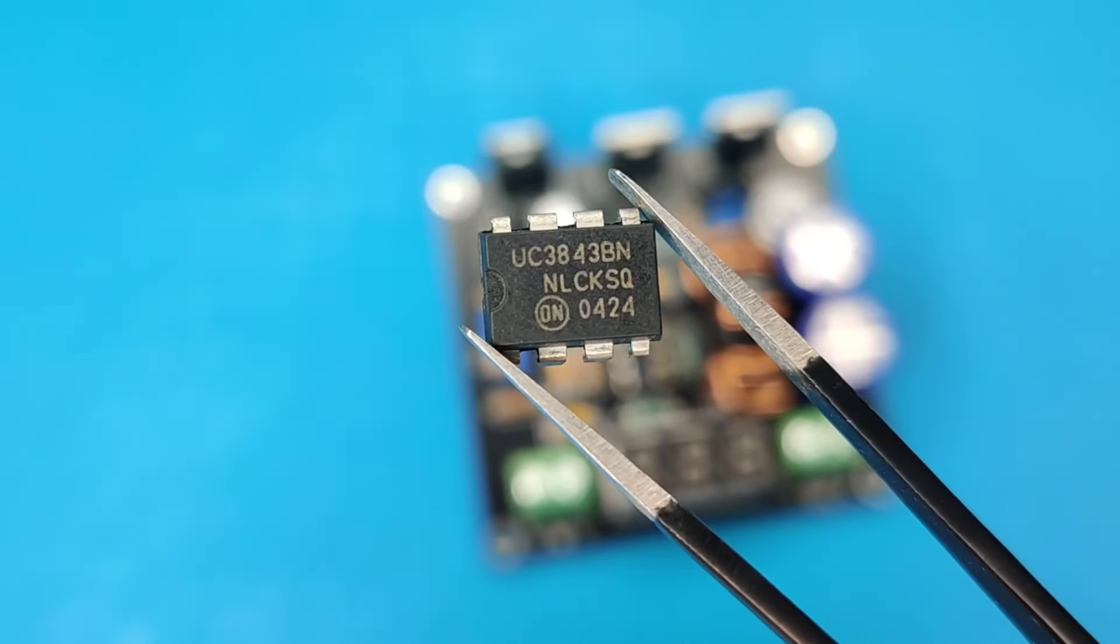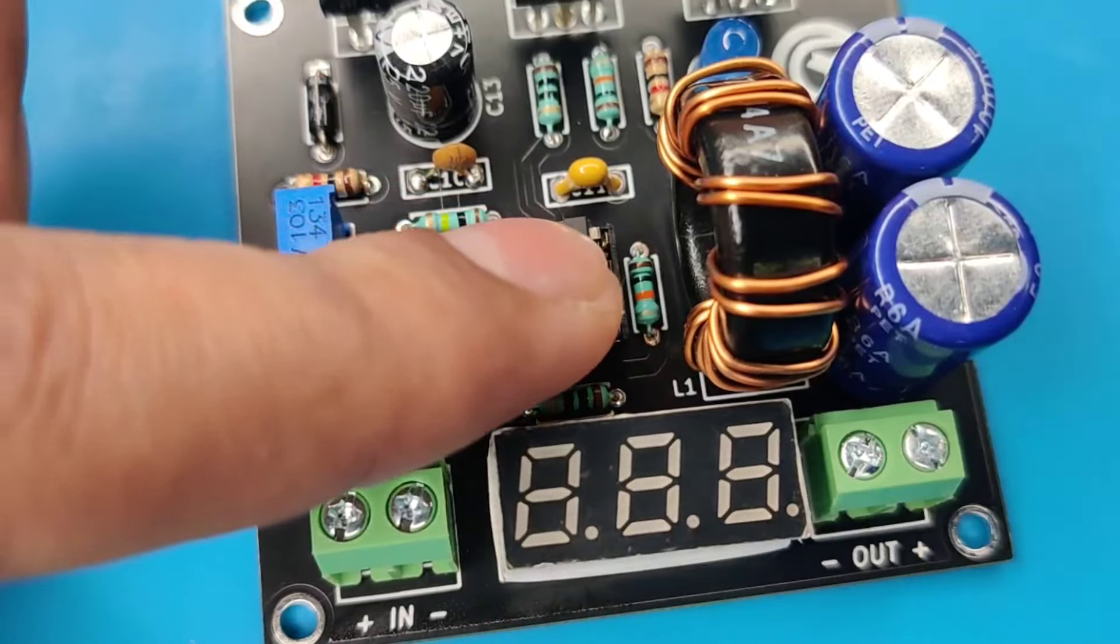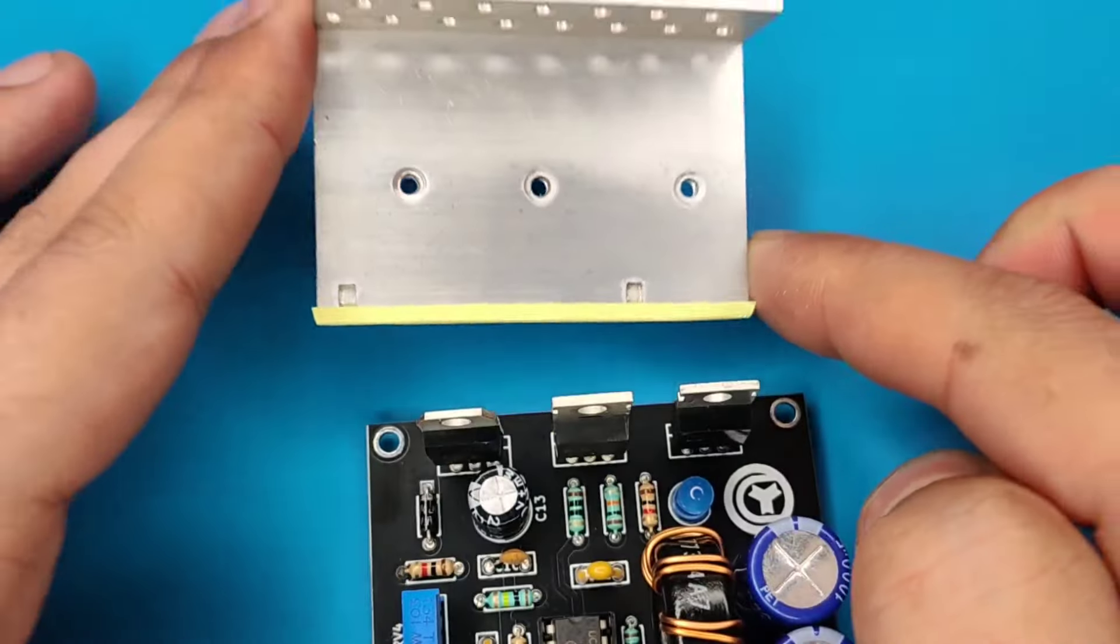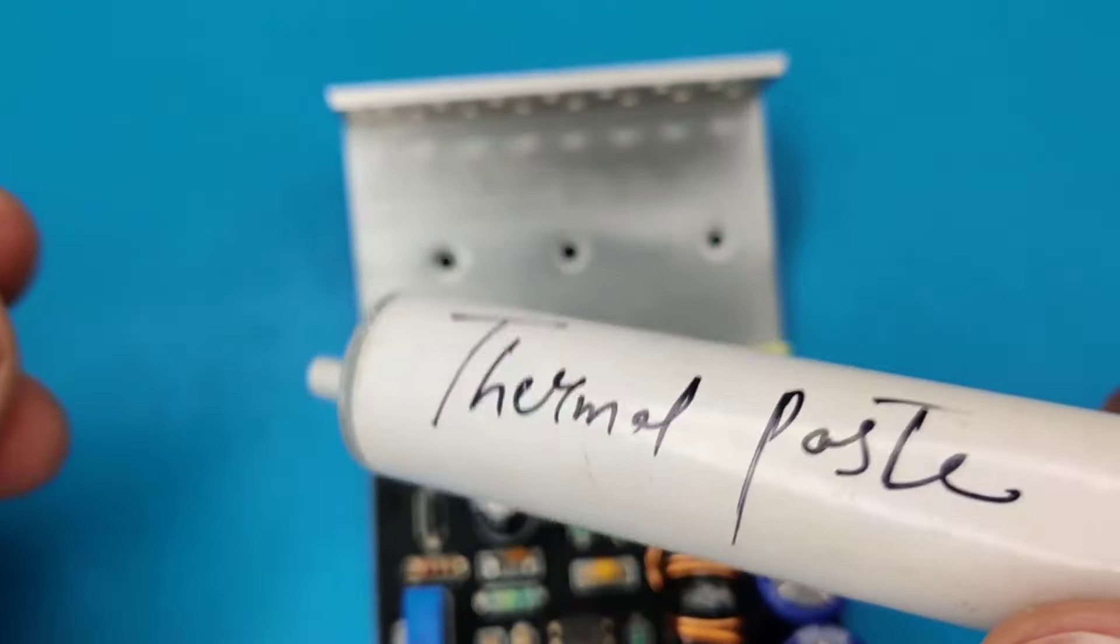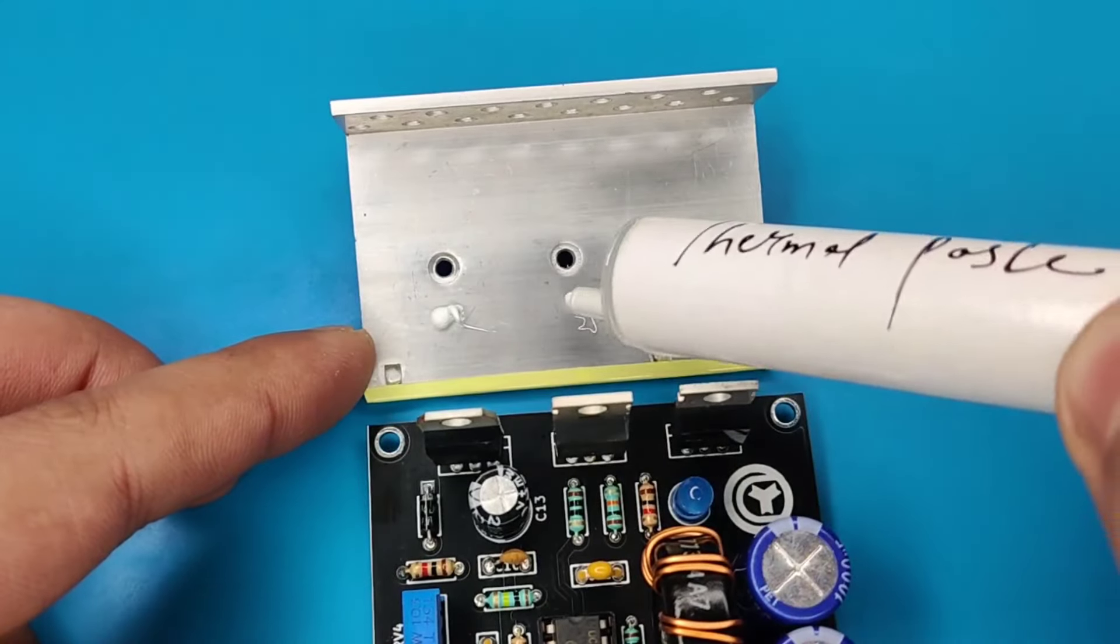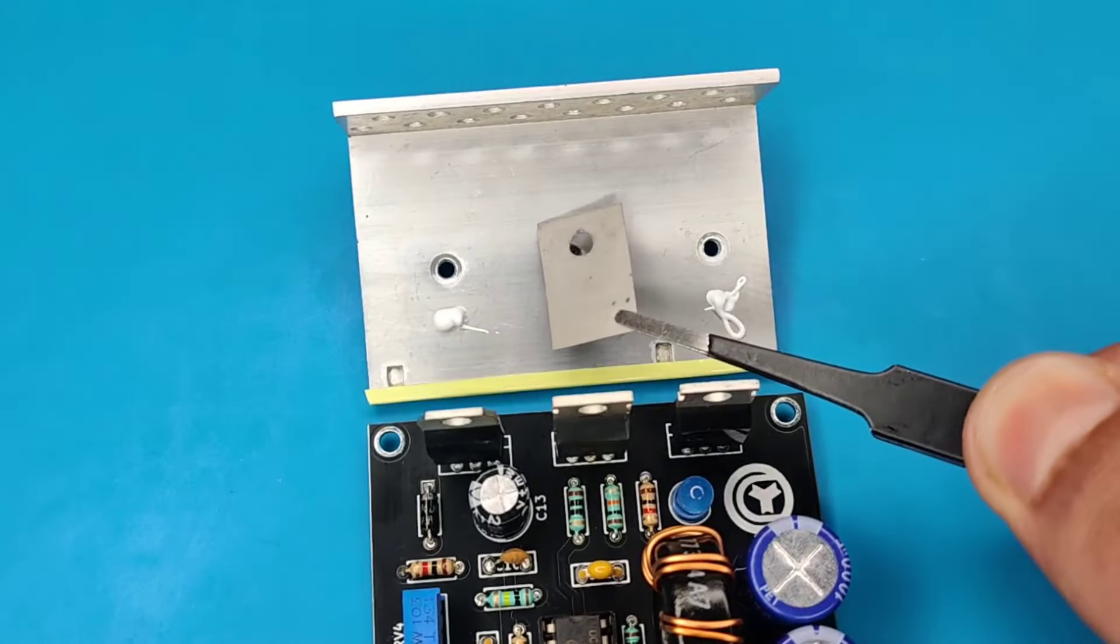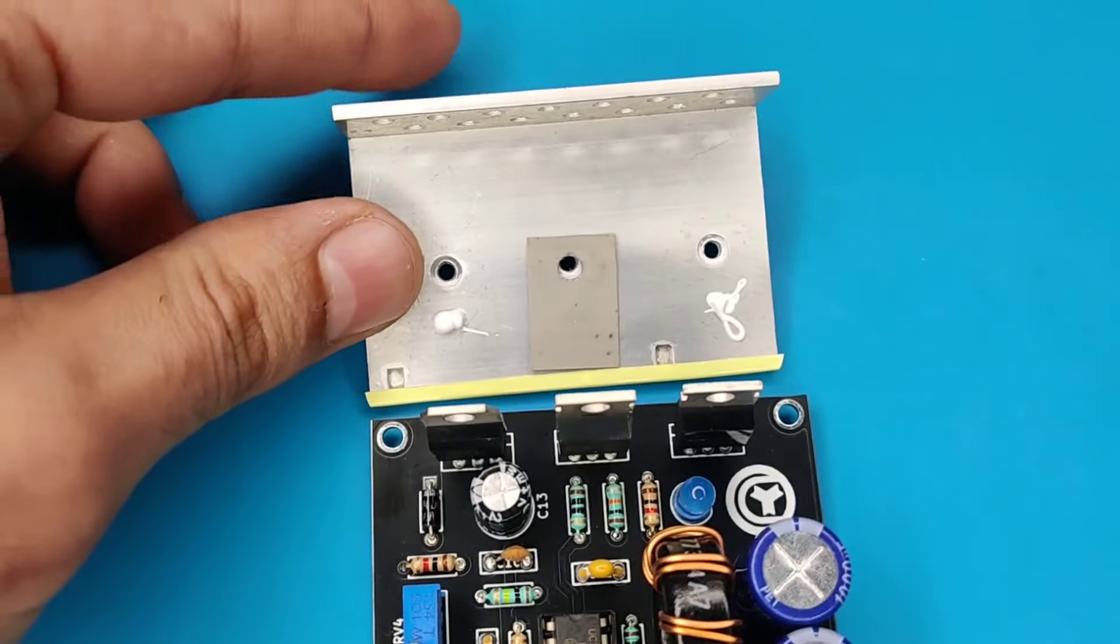Now take UC3843 IC and insert it into the IC base. Use a good-sized heatsink like this. Apply a little thermal paste for better heat dissipation. Use the silicone insulator to isolate the MOSFET from heatsink. Also use plastic washer for screws.